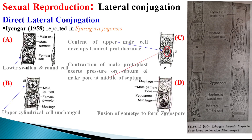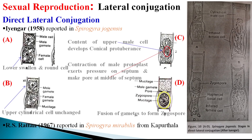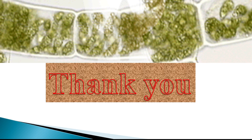Spirogyra jogiensis is not the only species known for direct lateral conjugation. Other species have been recorded from India, especially from the Kapurthala region. Spirogyra mirabilis was recorded by Dr. R.S. Ratan in 1967. The key factor to understand in direct lateral conjugation is how the septum is broken and a pore is created, allowing gamete migration.